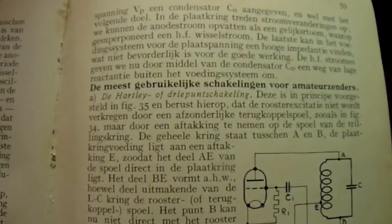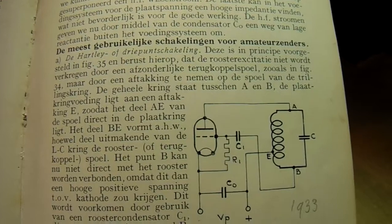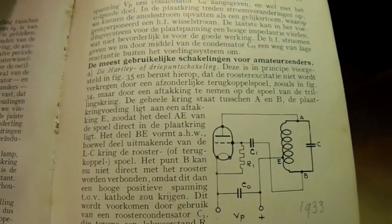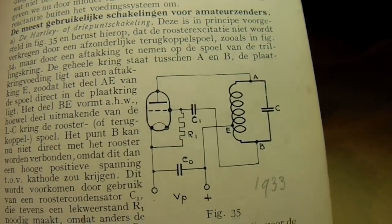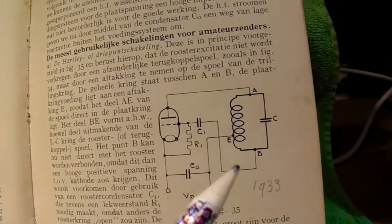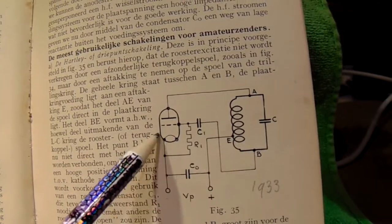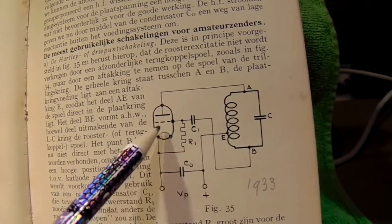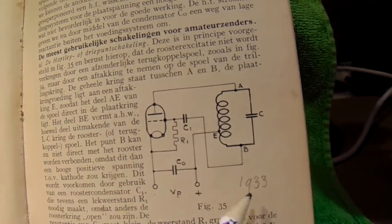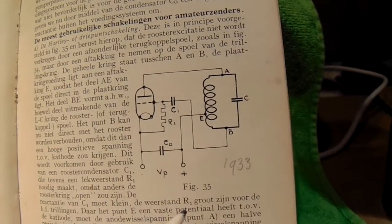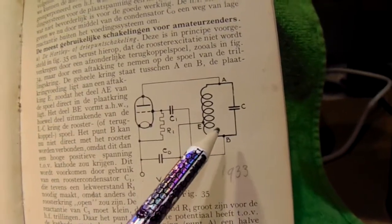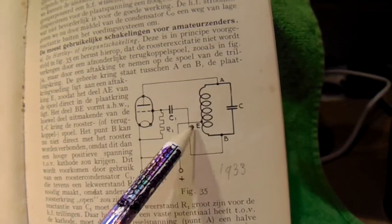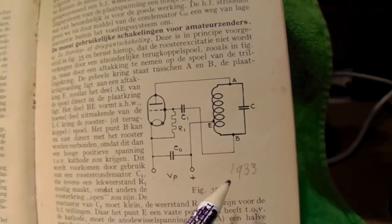This is a book from 1933 and this circuit shows a Hartley oscillator with a tube. You can see on the right side the frequency dependent unit here. It's in the lead from the anode. And it gets its supply voltage here, the anode, via this wire.